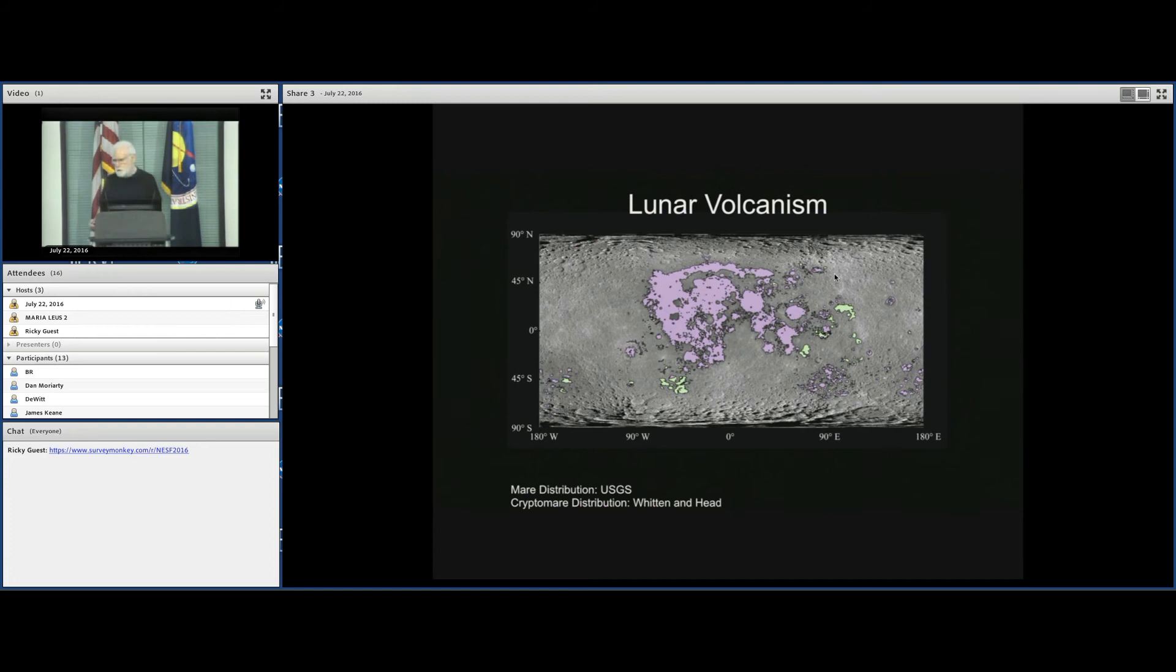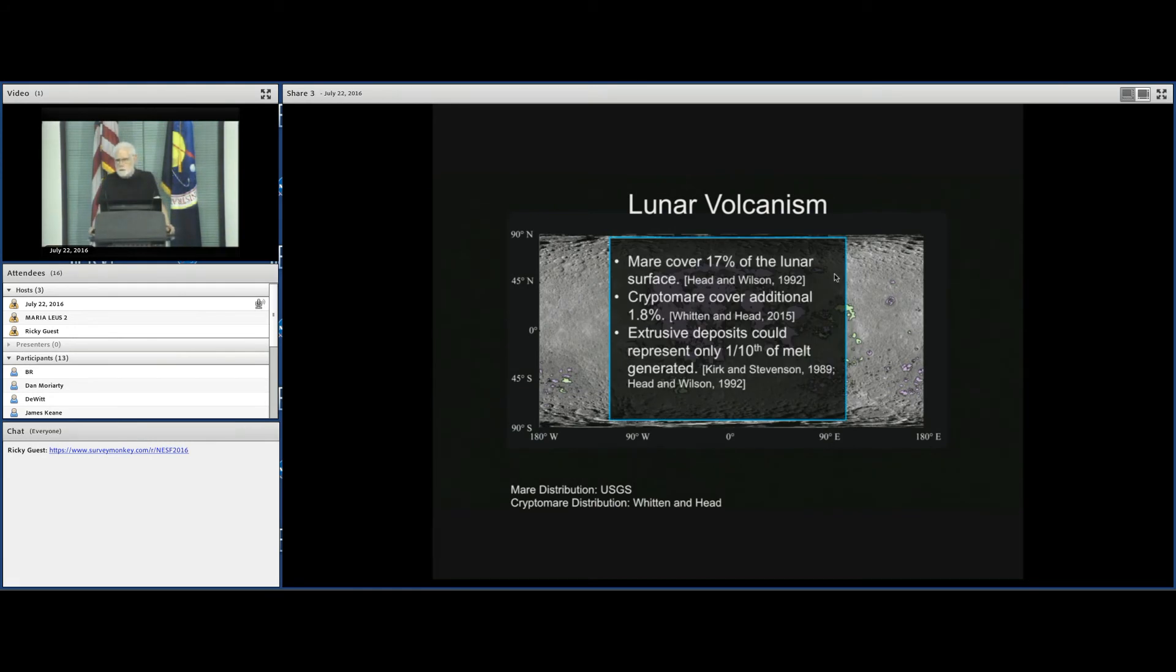Of course, we saw the distribution of Mare volcanism just previously in the purple area here. This is the global distribution. We can ask the question, where do the floor fractured craters occur? Mare cover 17% of the lunar surface, basically, and then CryptoMare, as determined by Jenny Whitten, cover another 1.8%. So extrusive deposits only represent about one-tenth of the melt available, based on calculations from several different points of view. Kirk and Stevenson and Lionel 1992 took a look at this, and most of the magma actually gets in place in dikes and not onto the surface. So what you see there is less than 1% of the total volume of the lunar crust, which is not very much. That is the extrusive equivalent. And a lot of it is intruded.